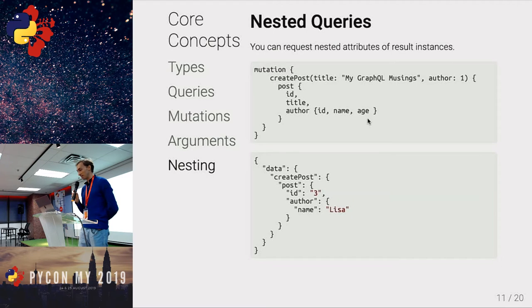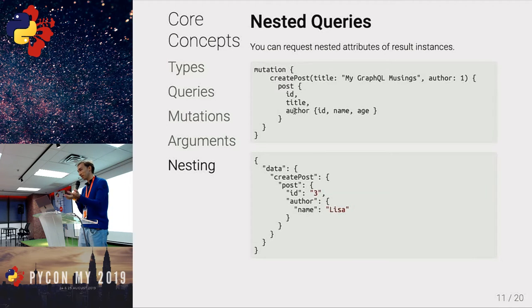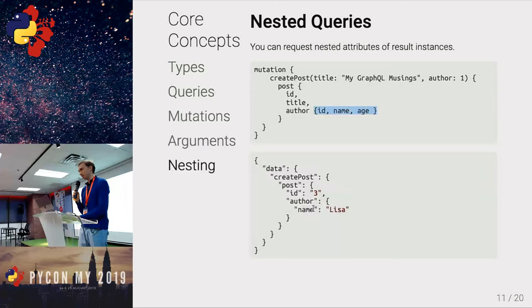The next concept is nesting. For example, if I have a Post with ID and title, and a foreign key to an Author, I can nest my query and ask for attributes of the nested object — the ID, name, and age of the author I'm querying. This is the 'graph' aspect and one of the main benefits over REST.